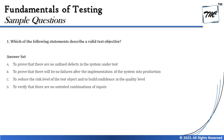Option B is talking about proving that there will be no failures after the implementation of the system into production. When we talk about the absence of error fallacy, it is something we try to achieve, but it may not be something we can promise. The statement says to prove there will be no failures after the system goes live, which again contradicts Principle One.